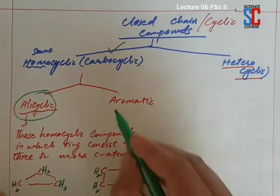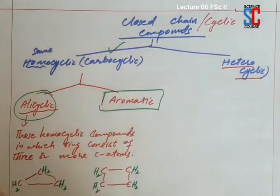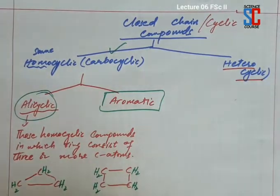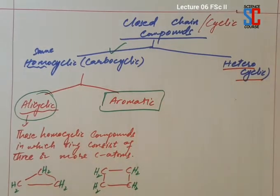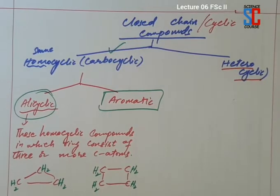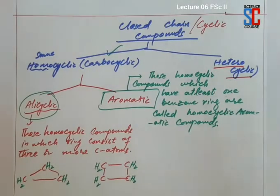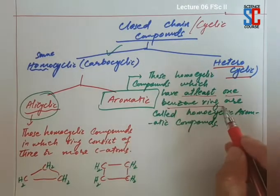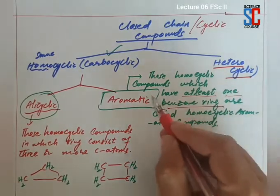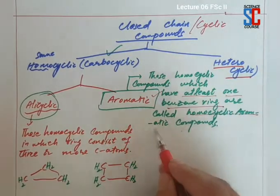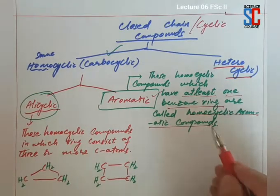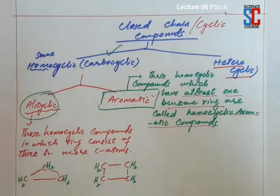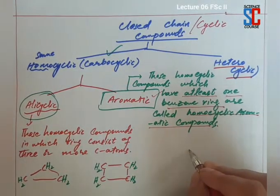Next we have aromatic homocyclic compounds. These are homocyclic compounds in which there is at least one benzene ring in the compound. Alicyclic compounds in which the link consists of at least one benzene ring are called homocyclic aromatic compounds. Benzene ring consists of 6 carbon atoms with alternate double and single bonds.